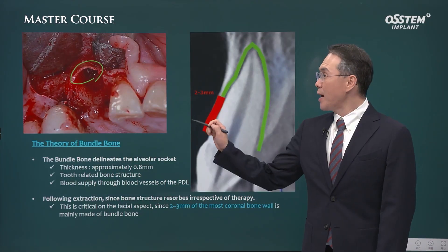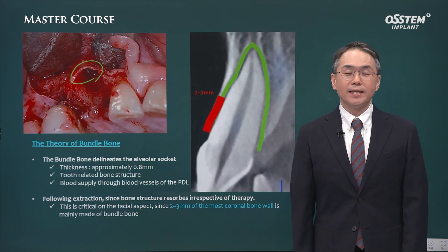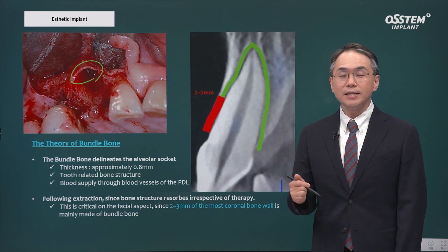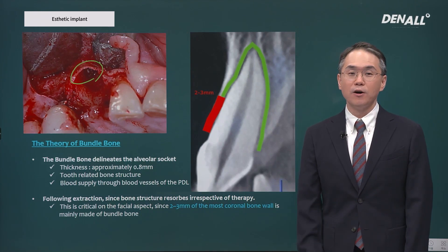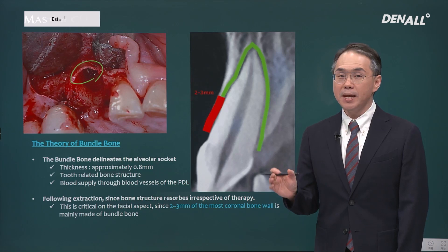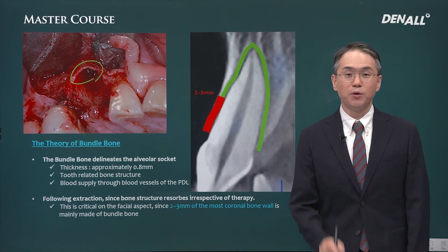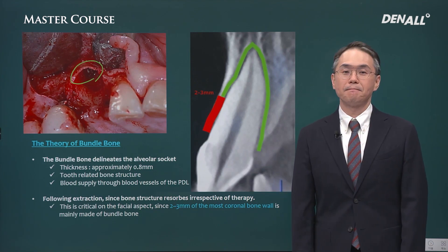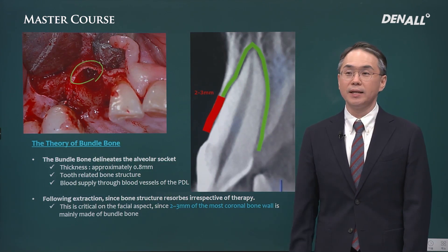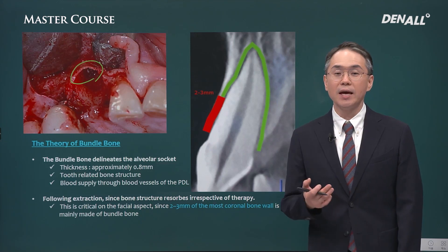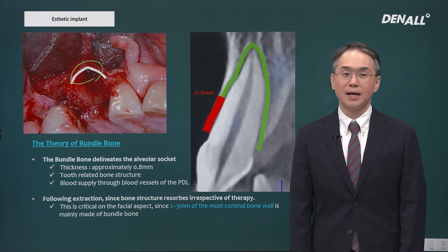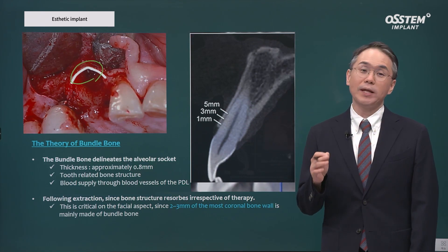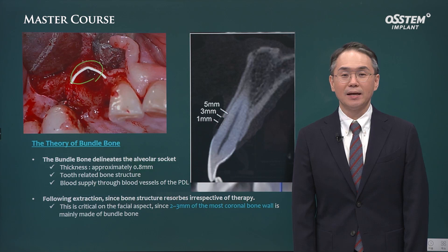We also need to consider resorption of the labial plate. Jumping distance is 2 mm, and if the gap is smaller than the jumping distance, you don't need to do grafting. However, we also need to consider resorption of labial bone clinically. Because of bundle bone theory, the bundle bone is less than 1 mm and surrounds the extraction socket. After loss of PDL, because there is no blood supply, it becomes resorbed. In other words, 2 to 3 mm on the coronal side consists of bundle bone that is less than 1 mm — it is going to be resorbed and we cannot prevent this. On X-ray and CT, if the labial bone top is less than 1 mm, we cannot prevent it from being resorbed.